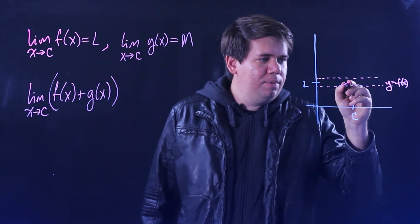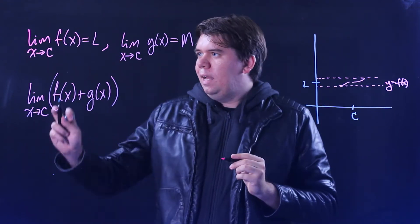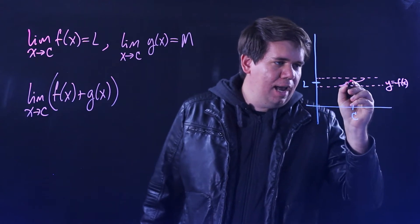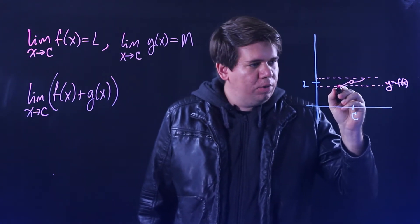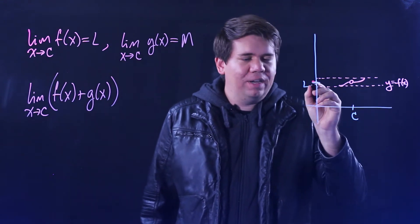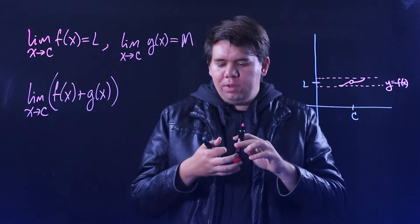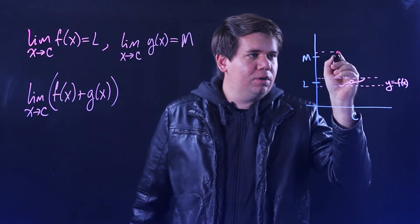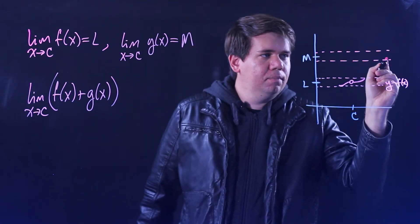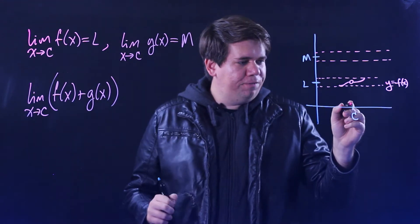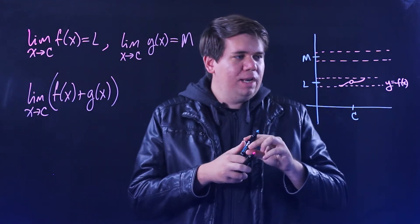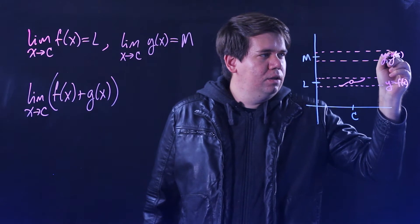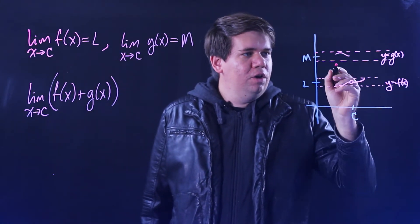Whatever your function f looks like, whatever y equals f of X looks like, it'll be very close to L when you're close to C — maybe coming in close. This doesn't say anything about what's happening at C itself, just close to C. At C the function could be something else, but we know that when we're close to C we'll be very close to L. We also know that our function G of X is going to be arbitrarily close to M when X is sufficiently close to C.